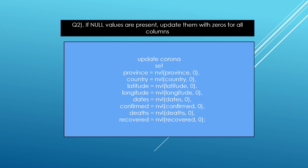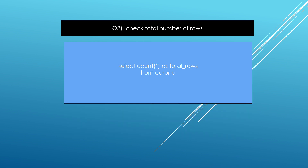The next question is: if null values are present, update them with zero for all columns. Basically I am finding which columns have null values and replacing them with zero automatically. I used the ISNULL function, which is used to automatically provide zero values wherever there is a null.